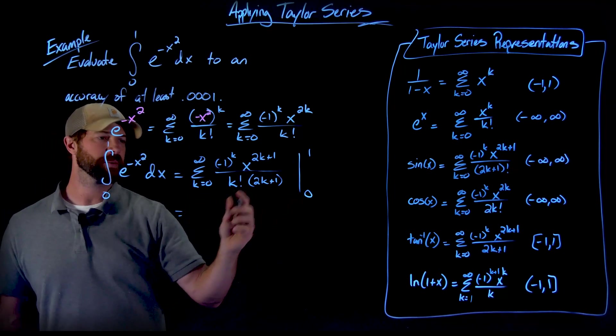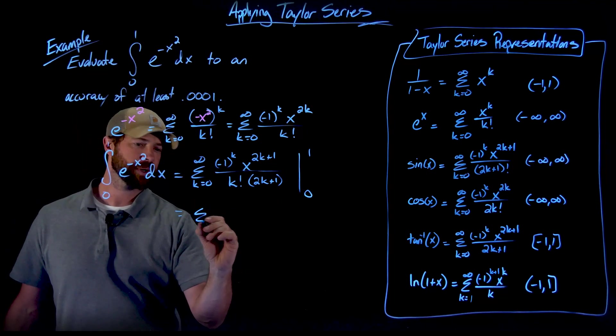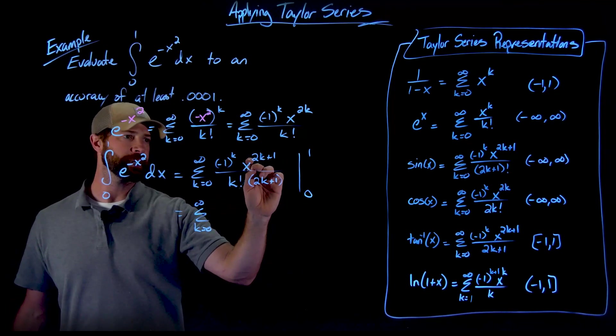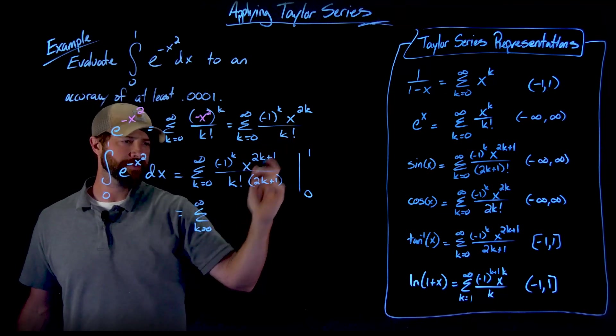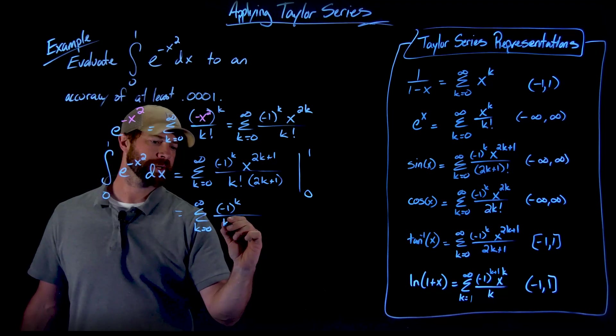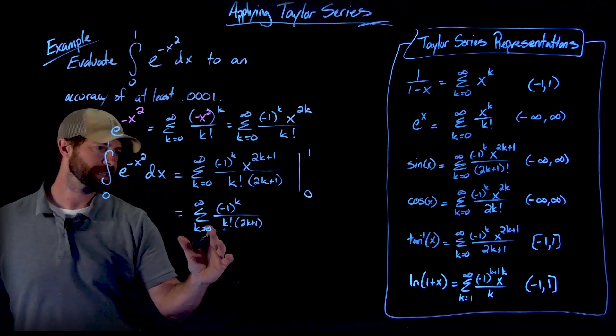And actually I can rewrite this statement right here. Because what this evaluation means is I'm going to take this series which represents this function. So I'm going to take this series and I'm first going to plug in a 1 here. If I plug in a 1 here for x, this is just going to be a factor of 1. So this whole thing simplifies into negative 1 to the k over k factorial times 2k plus 1. So that's that summation.